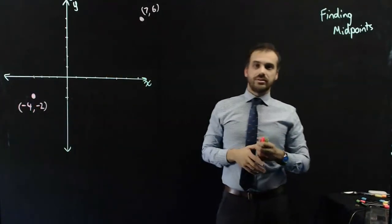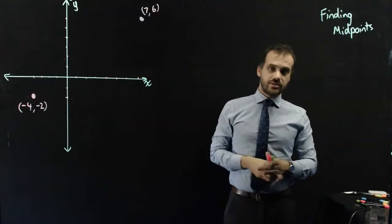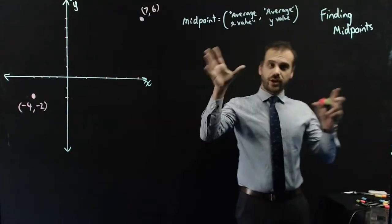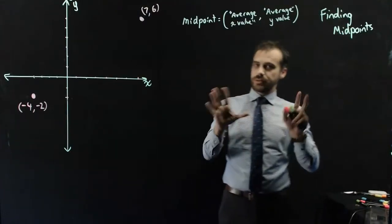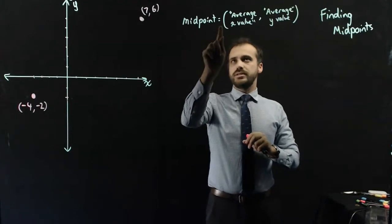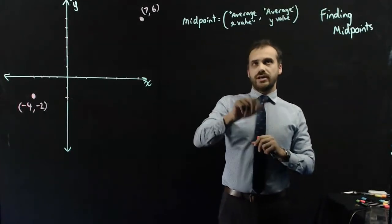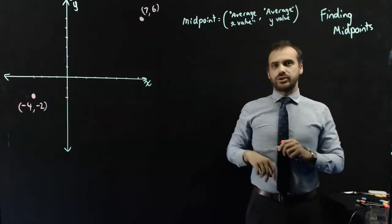And we're actually going to use an average, or a mean, to do that. So here's my rough idea of a formula. That's not a great formula, but it'll do for now. The midpoint is equal to the average x value, comma, the average y value.